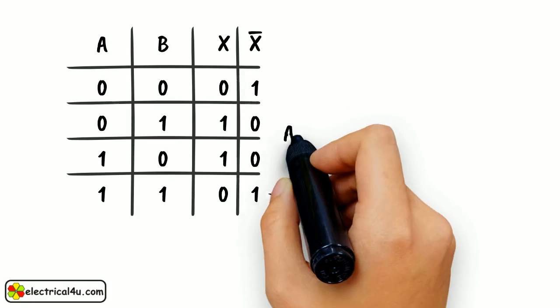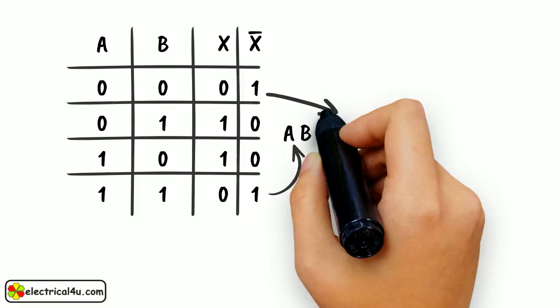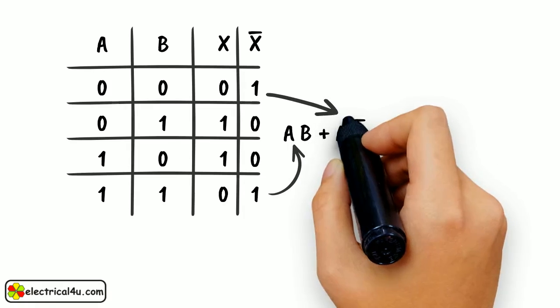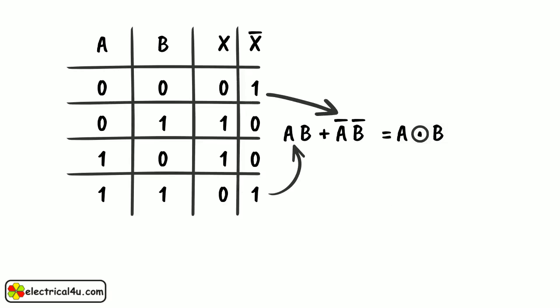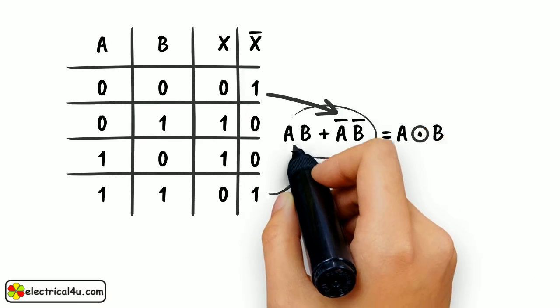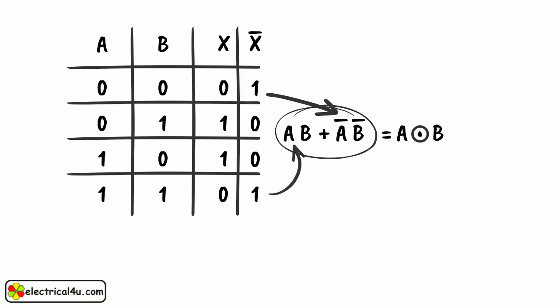Now, the truth table is satisfied by the equation AB plus A bar B bar. This is SOP or sum of product form.